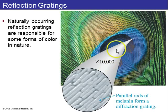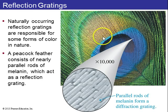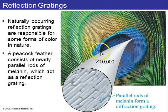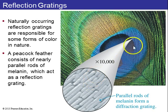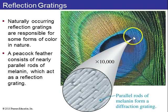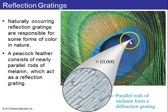This even occurs naturally. A peacock feather consists of little parallel rods of melanin, which act as a reflection grating. This is a microscopic view of a peacock feather. Depending on which way you look at it, you see different colors, because the white light diffracts as it comes off the feather.